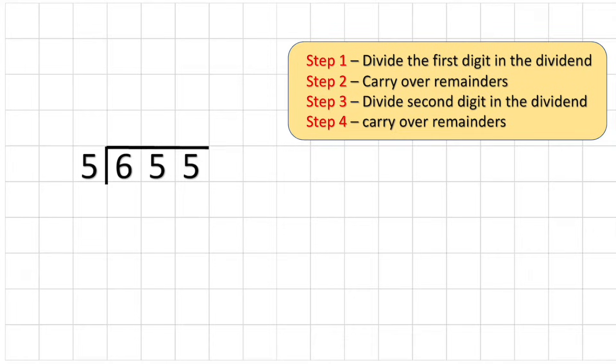And I'm going to follow the same steps. So step one says divide the first digit in the dividend. So I'm looking at the first six and I'm going to see how many fives do I have in six. So I'll draw my marbles to help me. I have six marbles, how many groups of five? I have one group of five. I can't get another group.